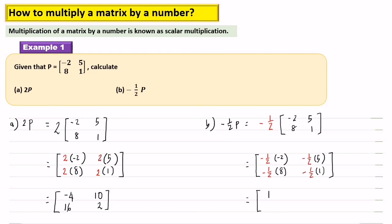Negative 1 over 2 times 5. Negative 1 over 2 times 8 equals negative 4, and negative 1 over 2 times 1 equals negative 1 over 2.